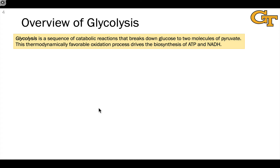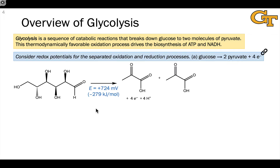It helps to think about glycolysis in the light of redox reactions, because we can separate it out into a series of three important processes that are related to redox chemistry. The first is the oxidation of glucose to two molecules of pyruvate and four electrons, as you see here. To balance out the charges, four H+ are also generated in this process.